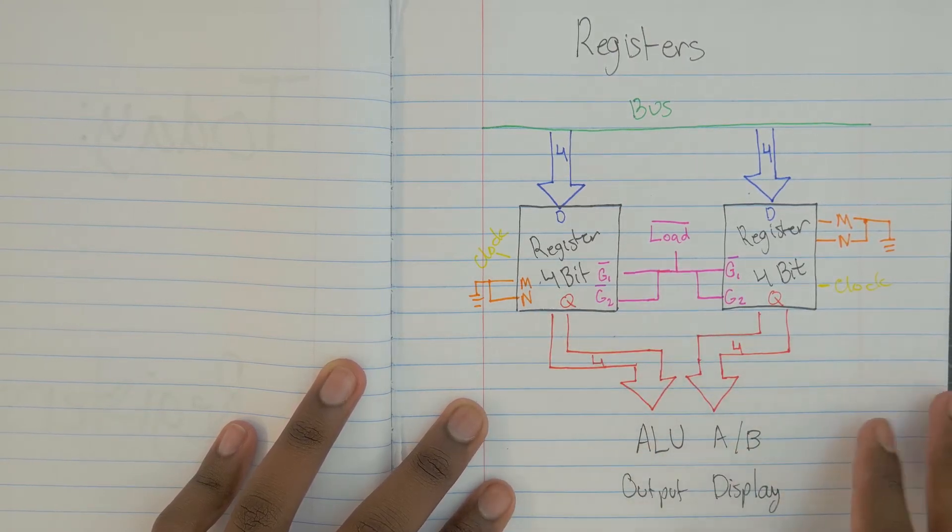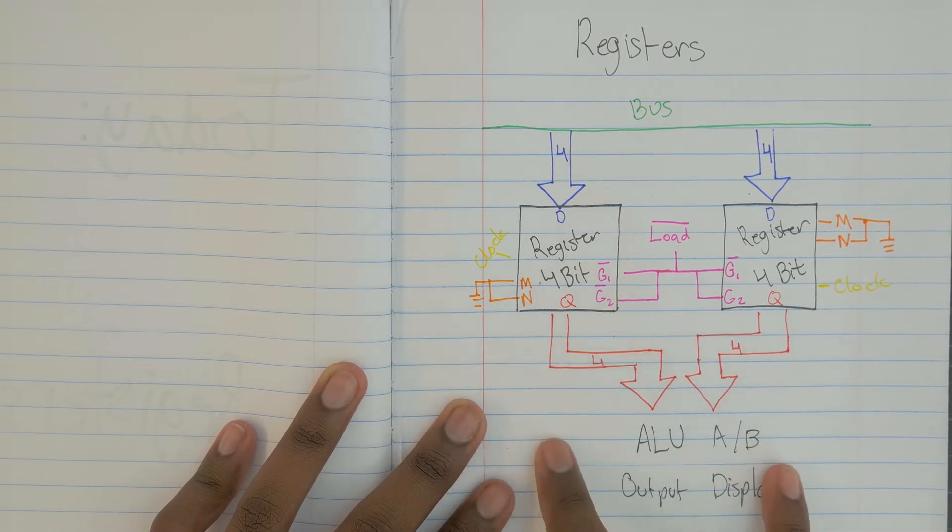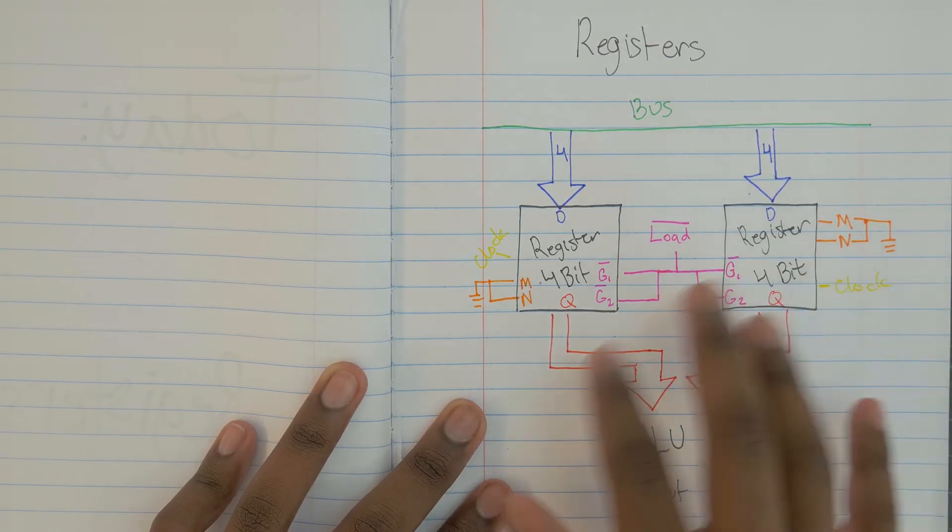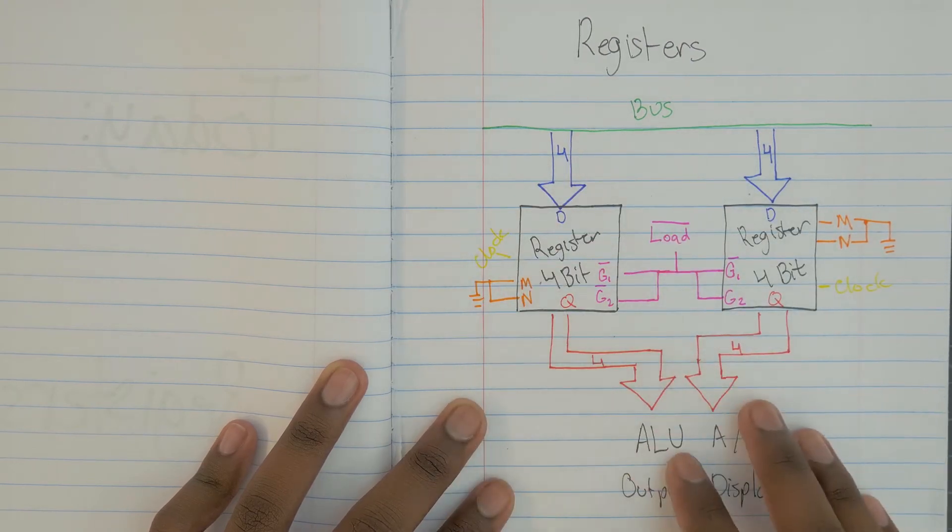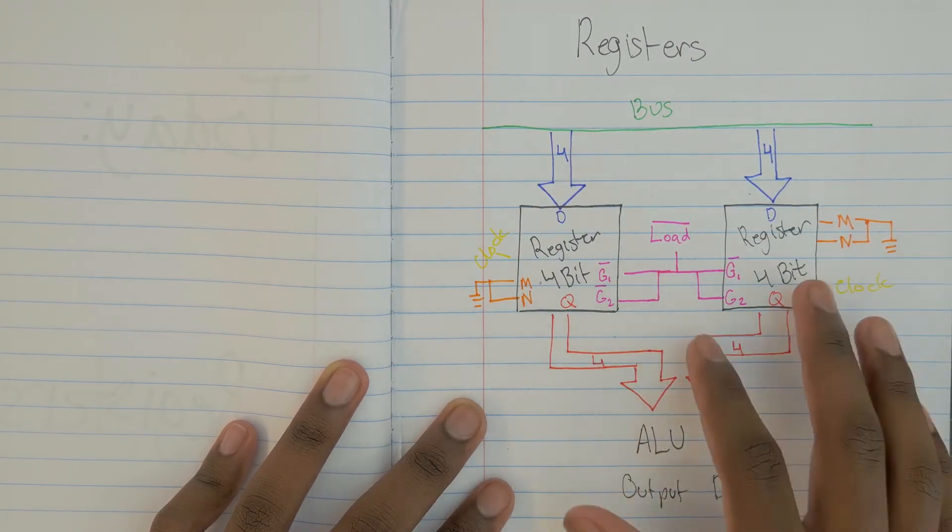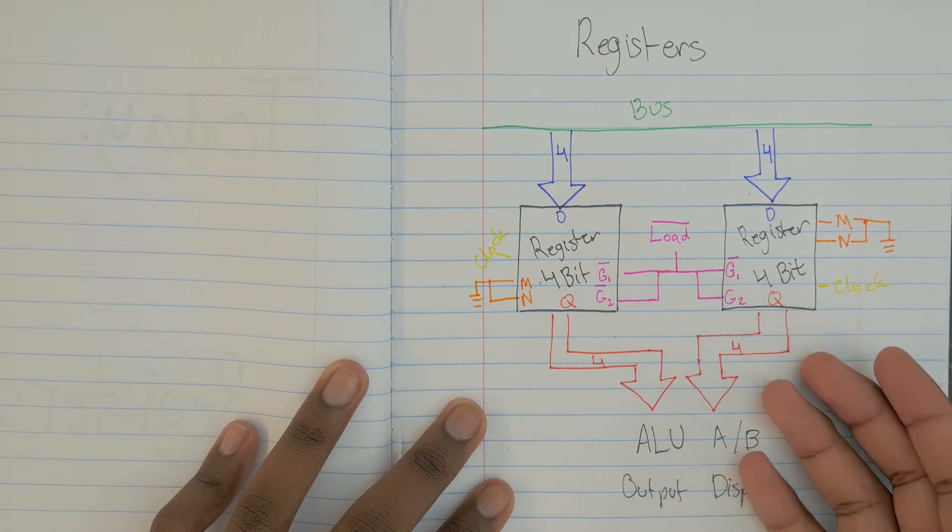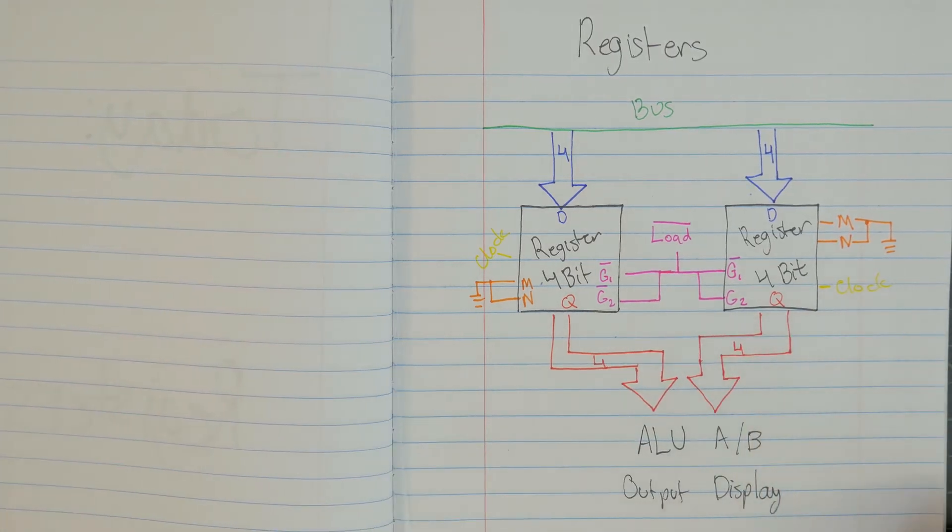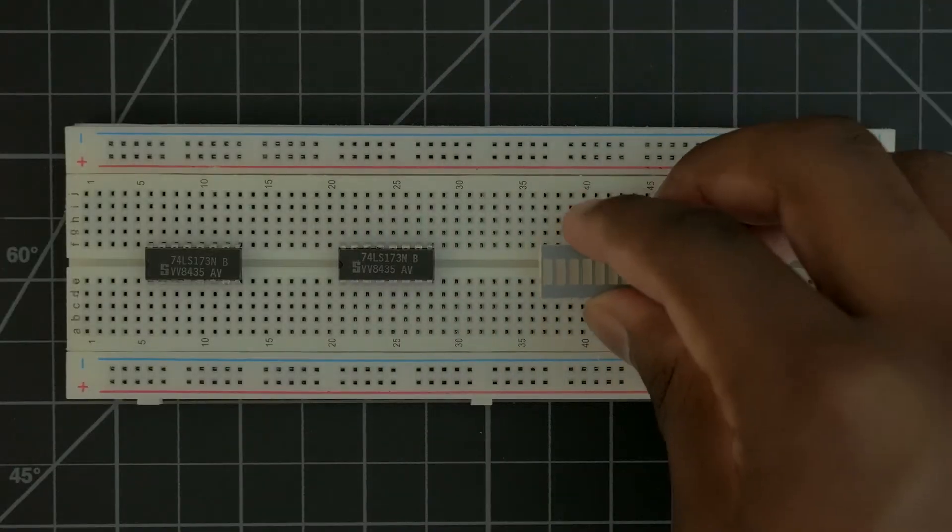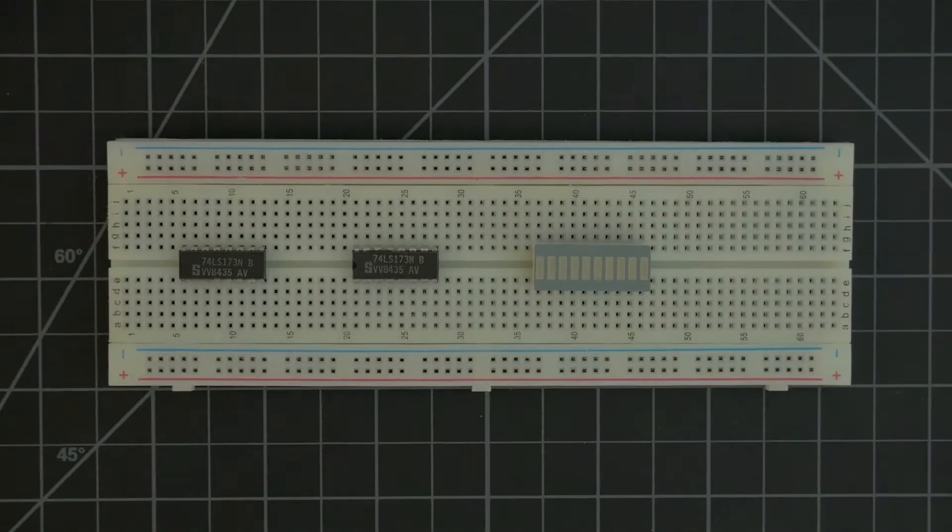And the other thing to note is that the Q values on these registers are not only going to go to the ALU or output display or whatever have you, but they're also going to go to LEDs so that we can constantly see what is in the register at all times. So overall, this diagram gives us a pretty good look at what we need to know in order to hook up the register. So all that's left to do is to actually hook them up. So we'll just do that now. So to begin, we can just start by putting our LED display down.